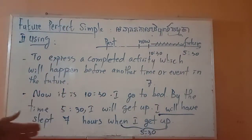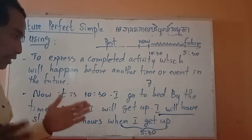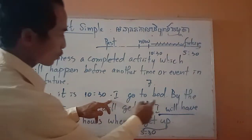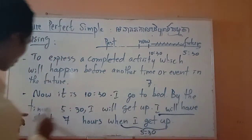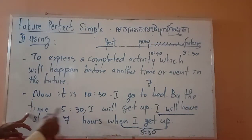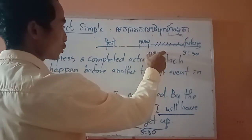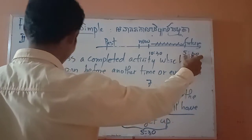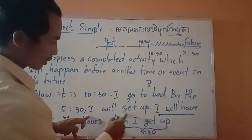Now I will show you an example. Now it is 10:30 — the time right now is 10:30. I go to bed now, and by the time 5:30, yes by the time 5:30 here.